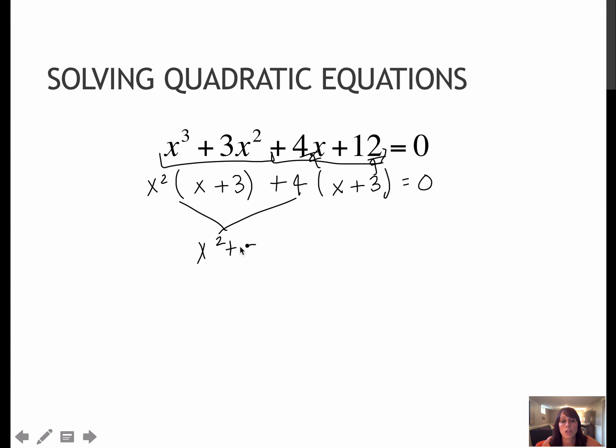x squared plus 4 with a common factor of x plus 3. And now this is the problem: this does not factor into x plus 2, x minus 2, because I have a plus here. There is no sum of squares pattern, so that means that's as far as I can factor.